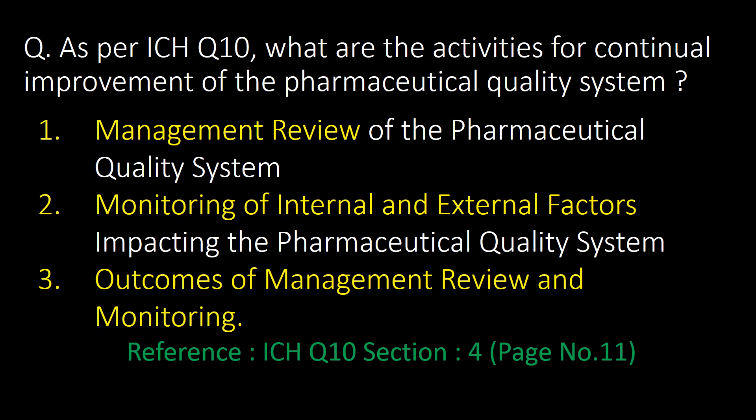As per ICH Q10, what are the activities for continual improvement of the pharmaceutical quality system? Management review, monitoring of internal and external factors, and outcomes of management review and monitoring are the important activities for continual improvement of the pharmaceutical quality system as per ICH Q10.